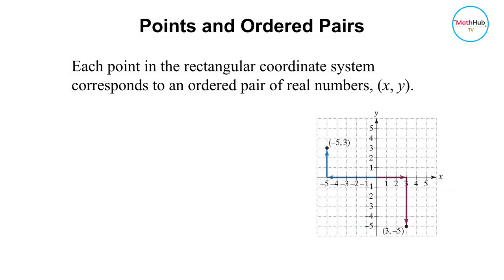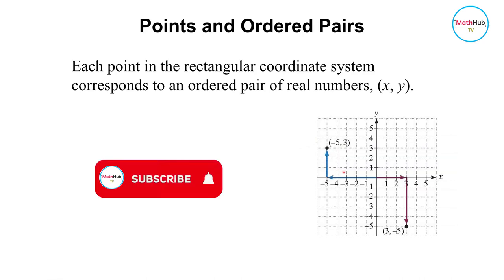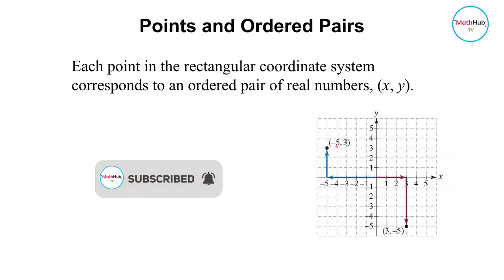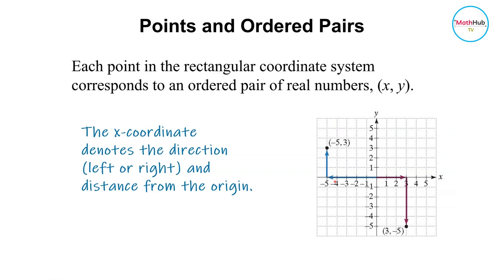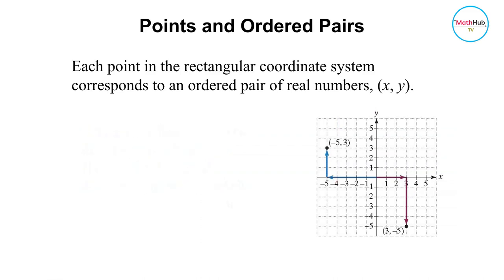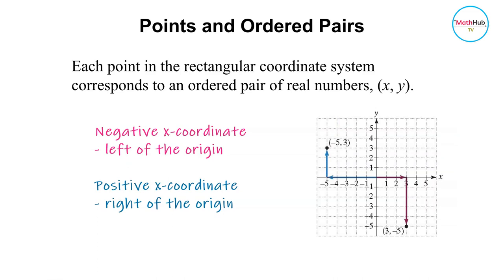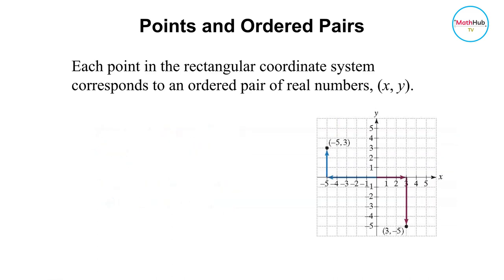Each point in the rectangular coordinate system corresponds to an ordered pair of real numbers x and y. For instance, look at the ordered pair negative 5, 3. The first number is called the x-coordinate, and this denotes the distance and direction from the origin. The negative means it's to the left of the origin, and 5 is the distance — meaning 5 units to the left of the origin.